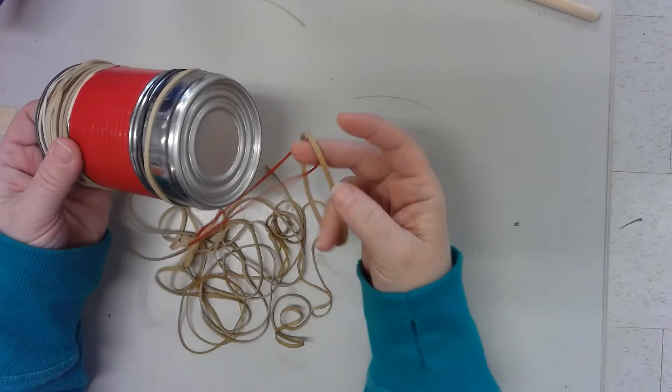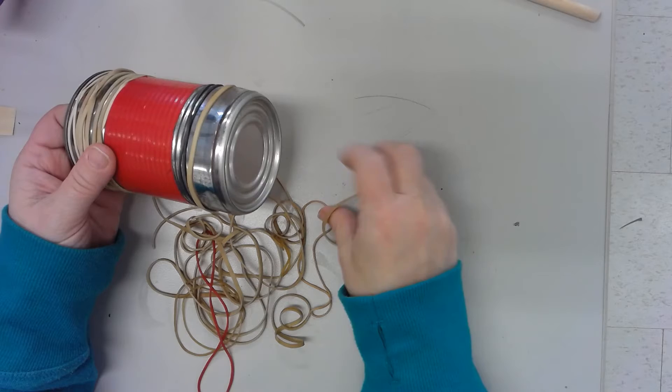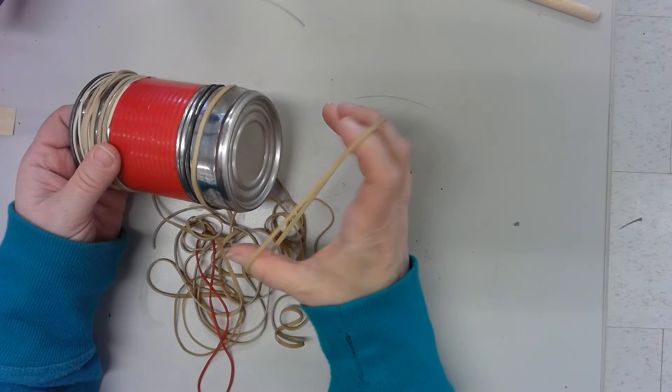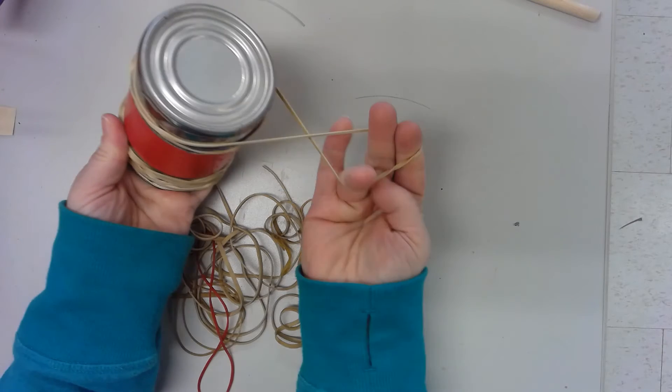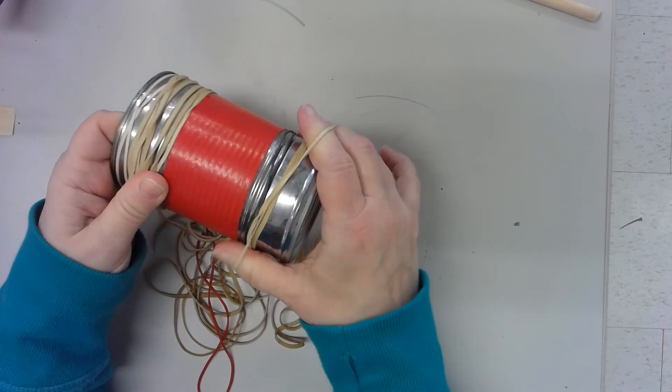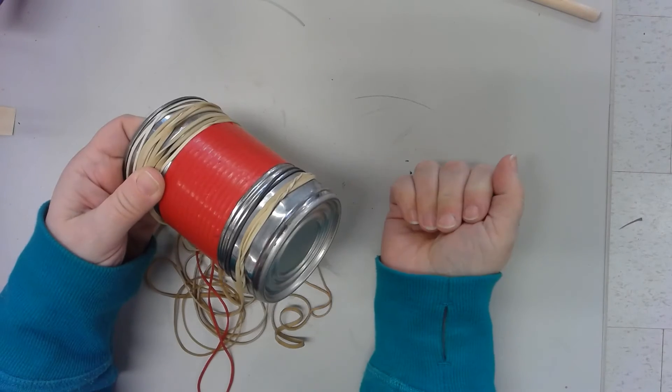You might get a really big rubber band like this one. So if you have a really big one you can put it on once, twist it and try and get it on a second time like that.